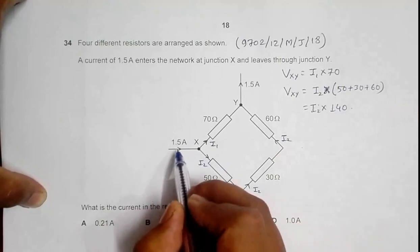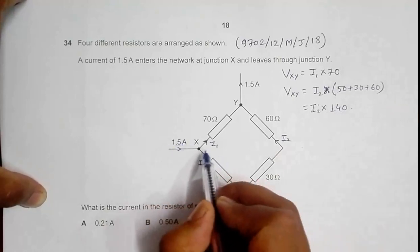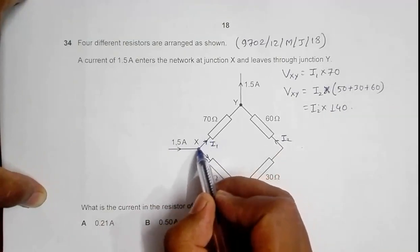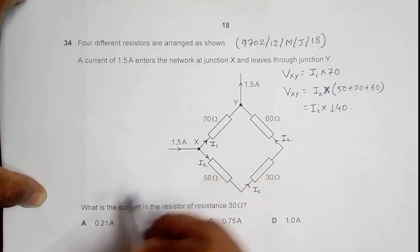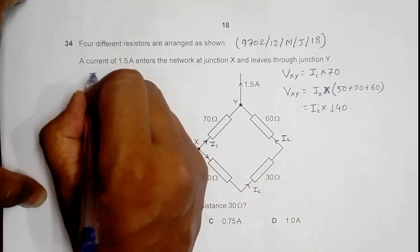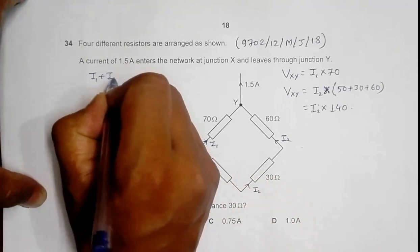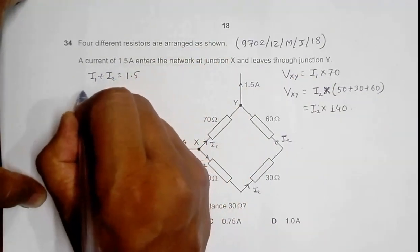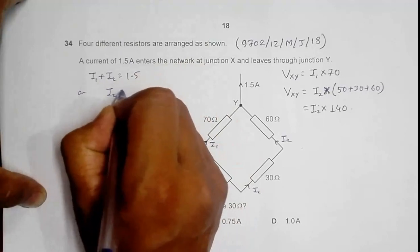According to Kirchhoff's law, what I can say is this 1.5 ampere should be equal to the sum of I1 and I2. This is the current leaving the junction and this is the current entering the junction. So I must have I1 plus I2 equals 1.5.